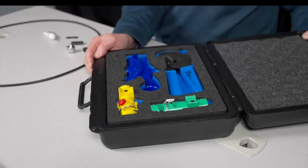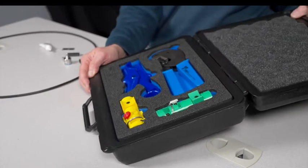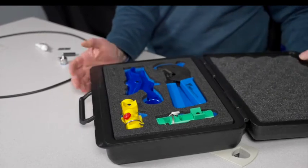As you can see, the kit contains a cutting tool, a crimp tool, and two prep tools.